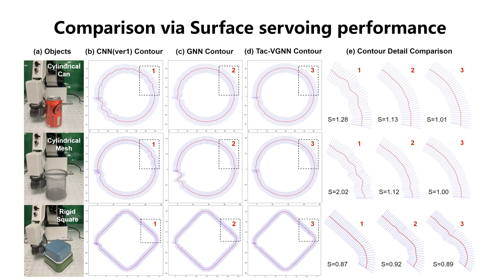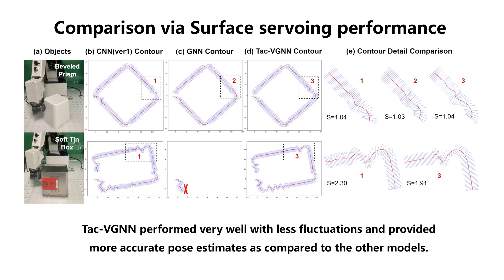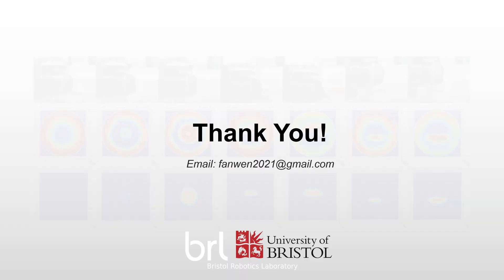Here is a comparison between three models. We defined an evaluation metric to quantify the tactile servoing performance, called smoothness, whose smaller value indicates a smoother trajectory. From our experimental results, TAC-VGN performed very well with less fluctuations on the trajectory and provides more accurate pose estimates compared to the other two models. Thanks for watching and listening.